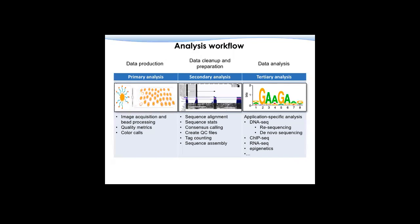In terms of data analysis, there are many different steps, but in general people divide them into three categories: primary analysis, secondary analysis, and tertiary analysis. Primary analysis is really just converting signals — whether electronic or imaging — into ACGTs. Those steps are called primary analysis and are usually taken care of by the sequencing manufacturers. That's why I say this is in the data production stage.